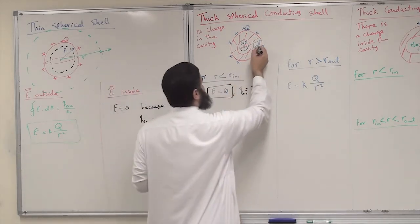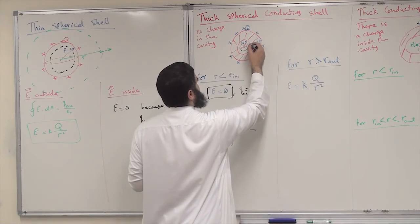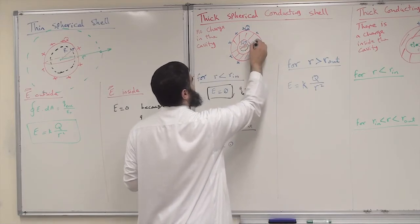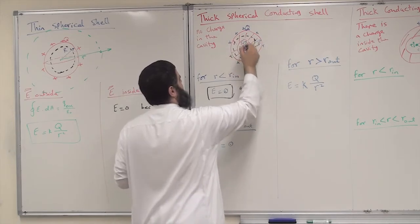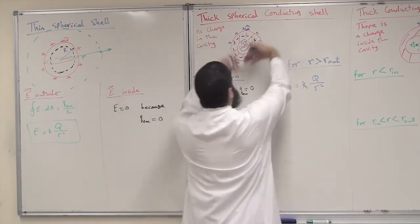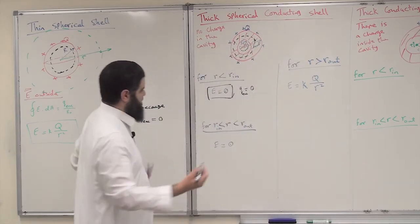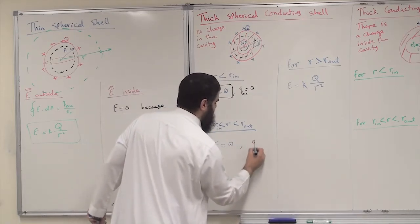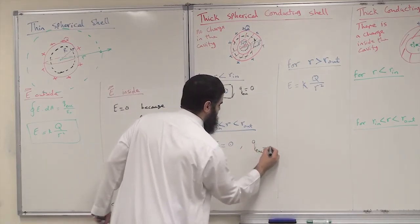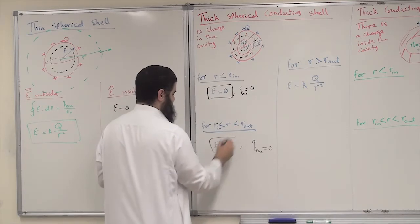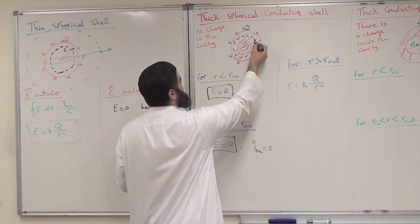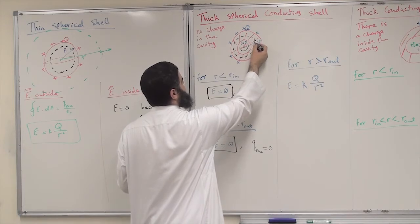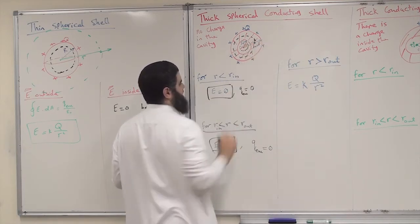For any point between r_in and r_out — inside the conducting material itself — draw the Gaussian surface and look inside. The q_enclosed is still equal to zero. As a result, E is also equal to zero. So E is zero in the cavity and E is zero inside the conductor between the inner radius and outer radius.